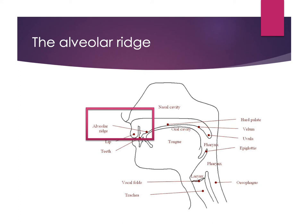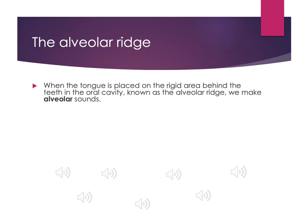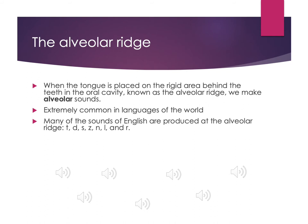Moving further back, we get to the alveolar ridge. Just a little bit behind your teeth, this is where your teeth go up into your gums — the hard area just behind your teeth. If you reach in, you can feel that gum area that curves down toward where your teeth are. When we put our tongue on that ridged area, these are known as alveolar sounds. Alveolar sounds are some of the most common sounds in languages of the world, and many English sounds are produced at the alveolar ridge.